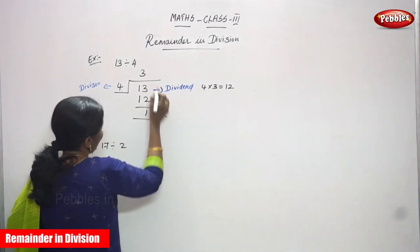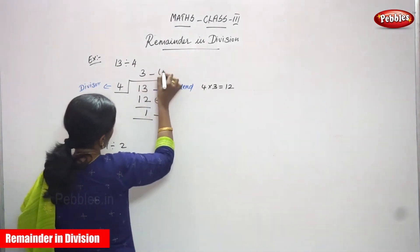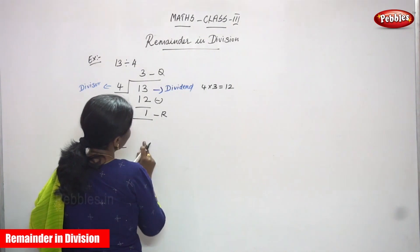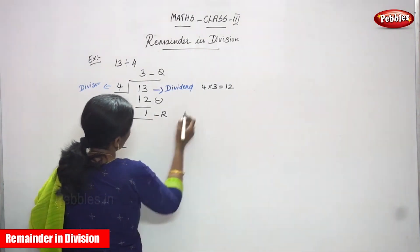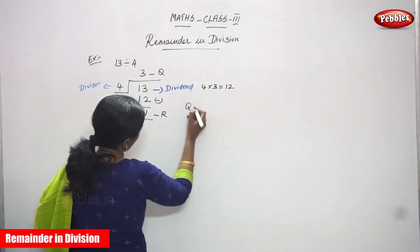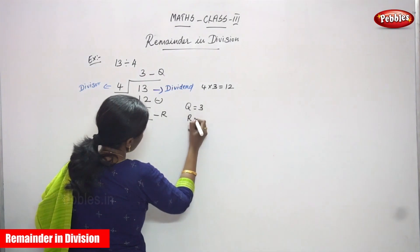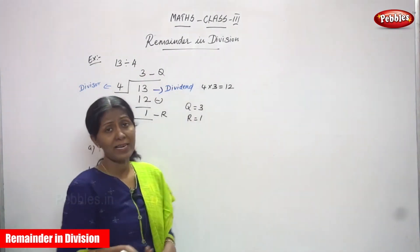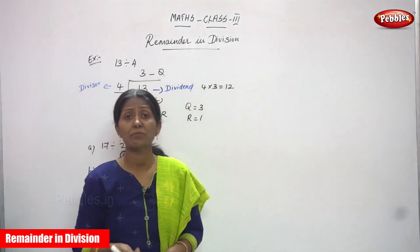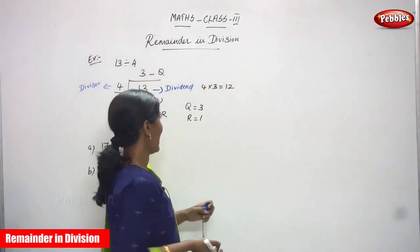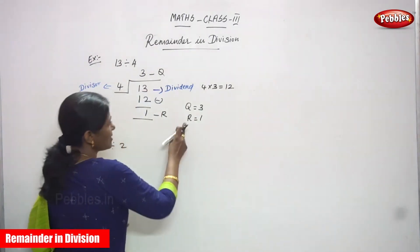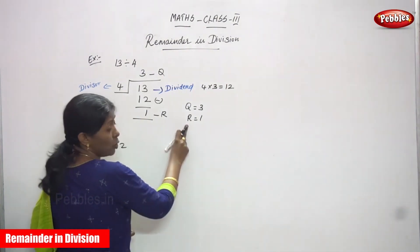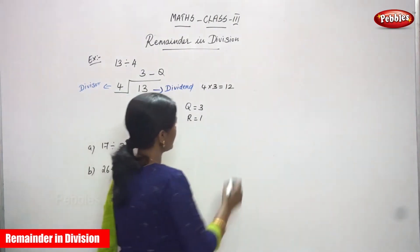So this is the remainder and this is the quotient. What is the answer? The remainder is 1. So quotient is 3 and remainder is 1. The leftover number is called the remainder. The remainder is always less than the divisor.